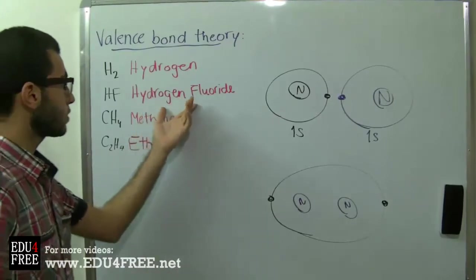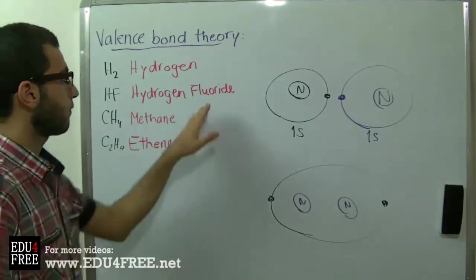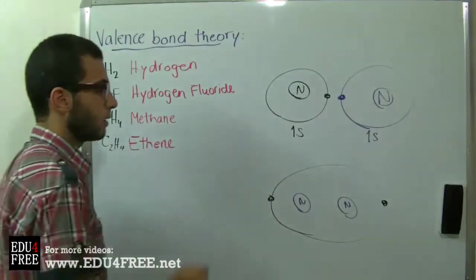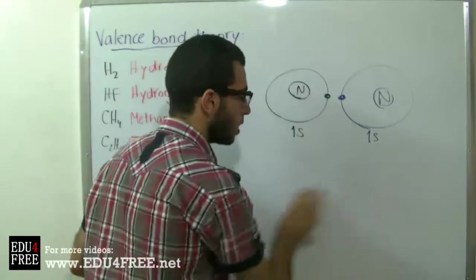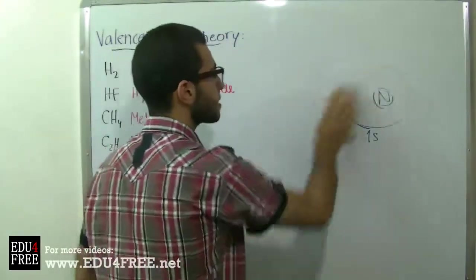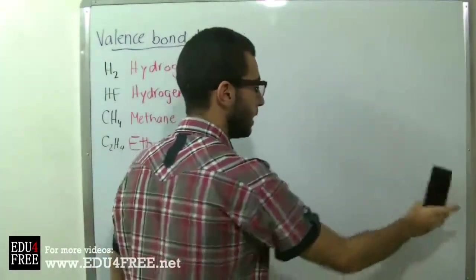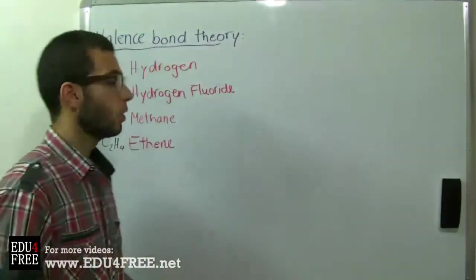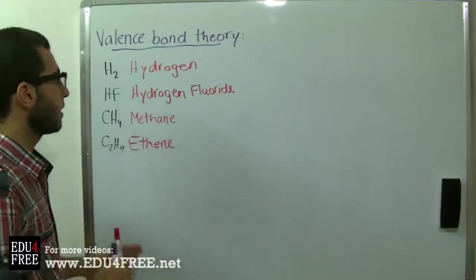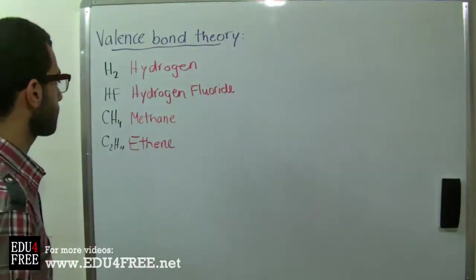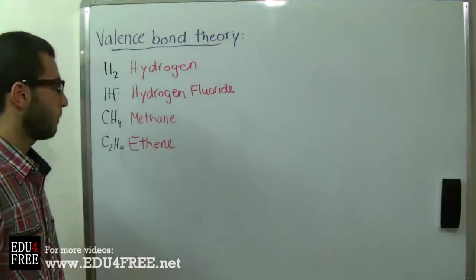It's the same as hydrogen fluoride, because the outermost sub-level of fluorine is the 2px, and the 2px contains one electron. So it needs just one more electron to be stable — meaning it needs just one hydrogen atom in order to make the hydrogen fluoride molecule stable.